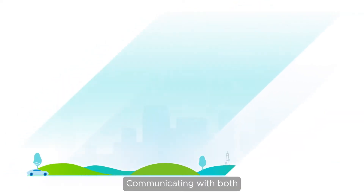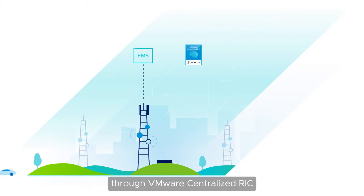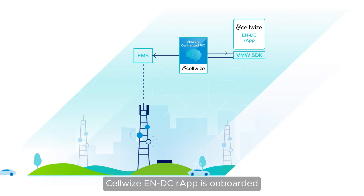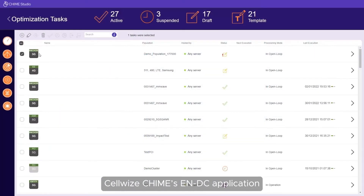Communicating with both O-RAN and purpose-built RAN deployments through VMware Centralized RIC, CellWise ENDC R-App is onboarded with the RIC using VMware RIC SDK. CellWise QIIME's ENDC application is then configured as follows.